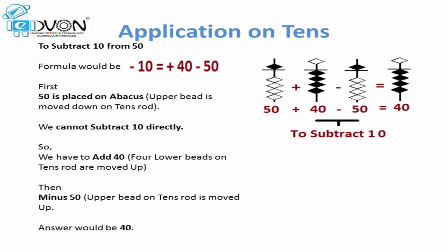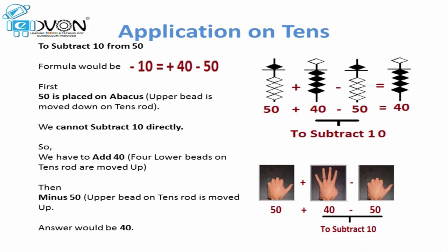Let's take the same example on our fingers. If we want to subtract 10 from 50, first we place 50 by opening the thumb of the left hand. To subtract 10, we don't have any finger open on the left hand — we only have the thumb equal to 50. So we apply the formula: minus 10 equals plus 40 minus 50. We open 4 fingers on the left hand and close the thumb. As a result we get 4 fingers on the left hand representing the value 40. So our answer is 40.